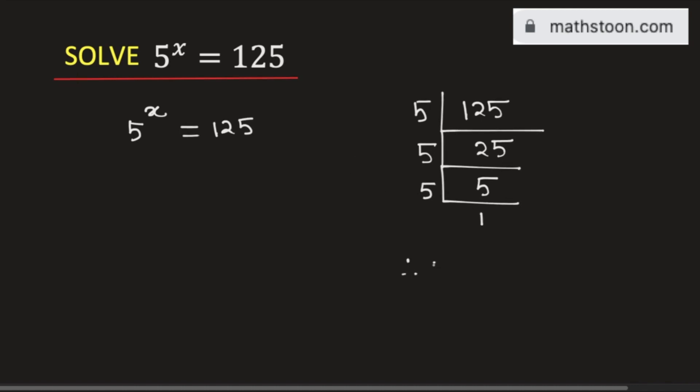So 125 is equal to the product of these numbers. That is 125 is equal to 5 times 5 times 5. So it is equal to 5 cube.